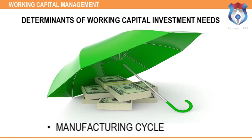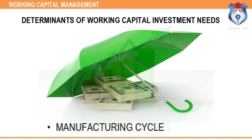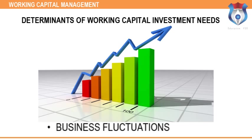Manufacturing cycle: starts with the purchase of raw materials and is completed with the production of finished goods. If the manufacturing cycle involves a longer period, the need for working capital will be more. Business fluctuations: seasonal and cyclical fluctuations in demand for a product affect working capital requirements considerably, especially the temporary working capital requirements of the firm.